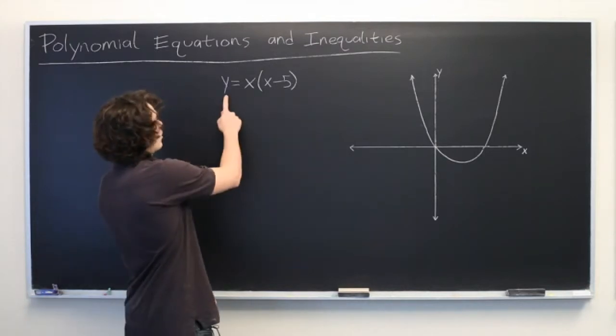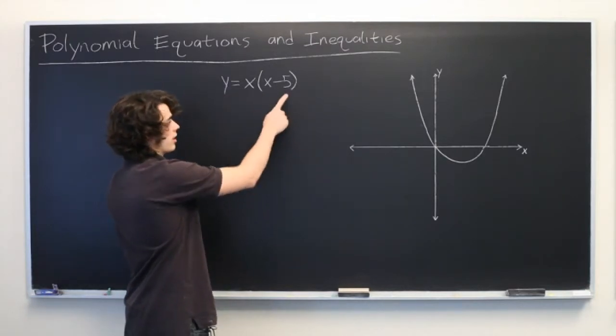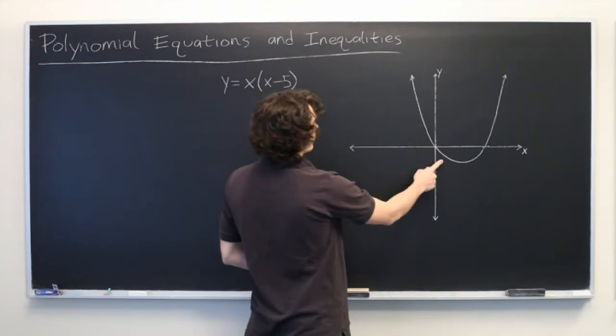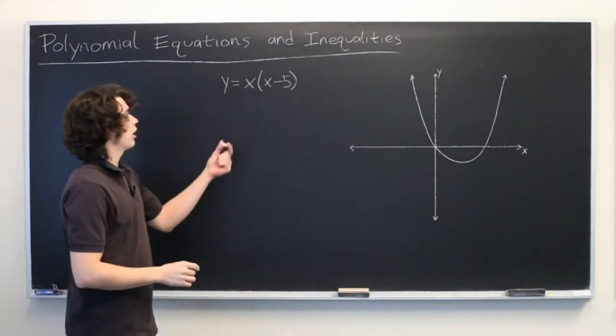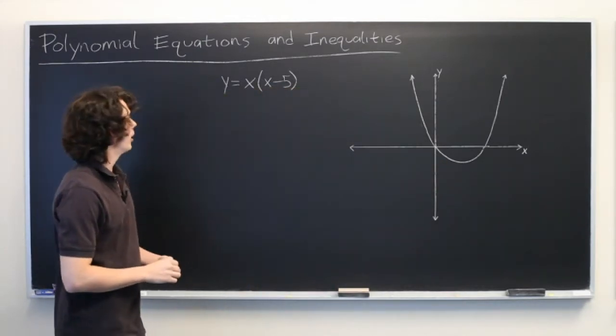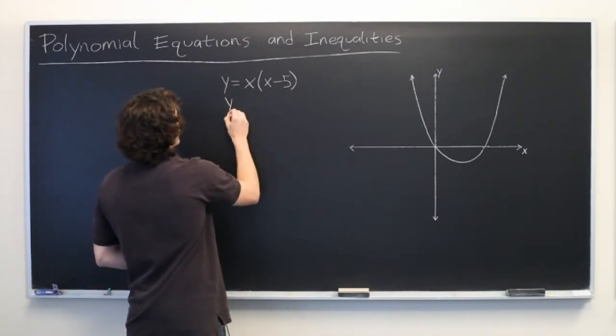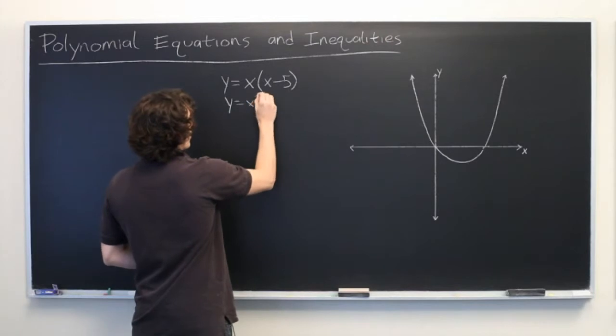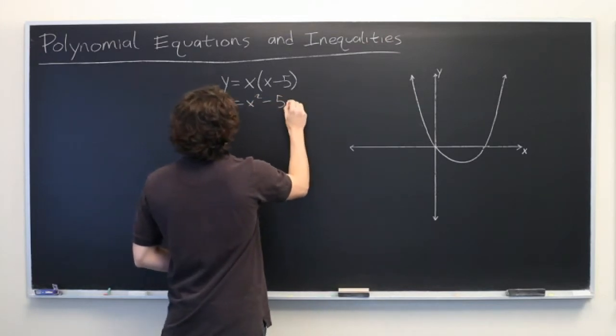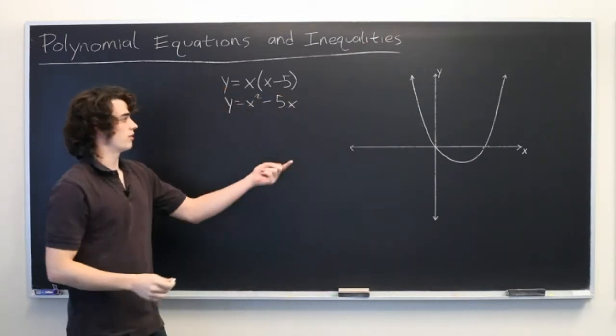Here we have the equation y equals x times x minus 5 with its graph over here. It's a simple parabola. This may not look like a polynomial in this form, but we can quickly make it one by distributing the x. Y equals x squared minus 5x, which gives us the same graph.